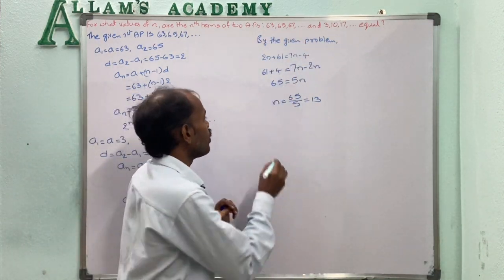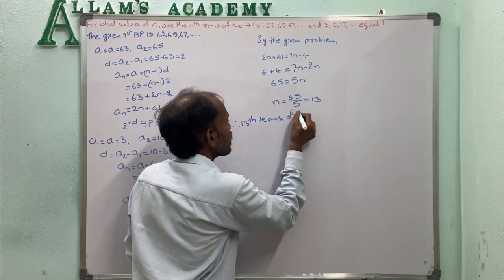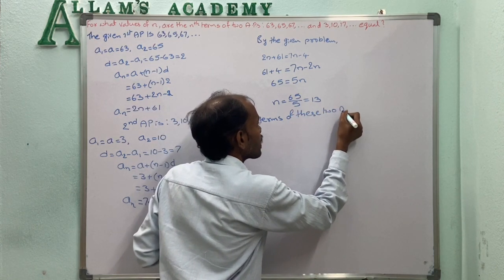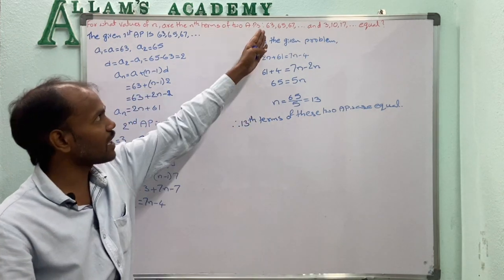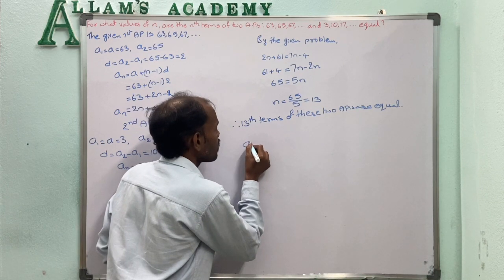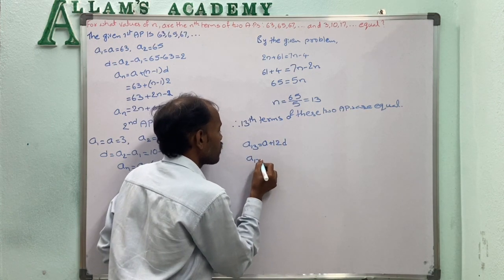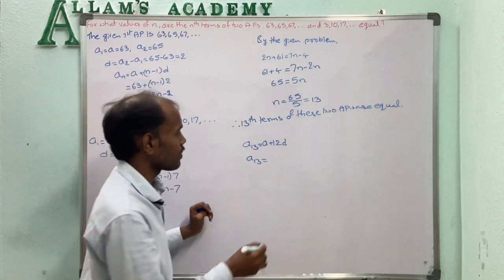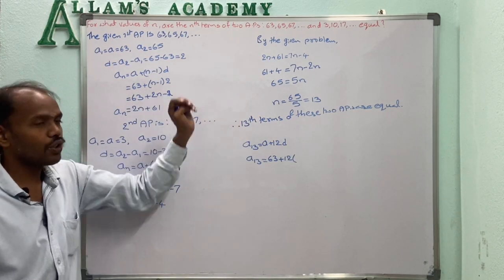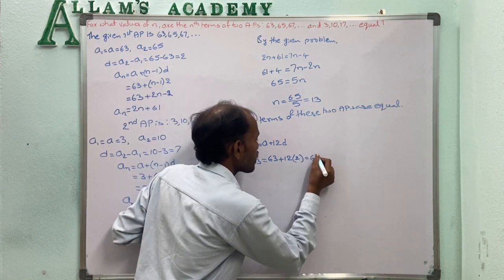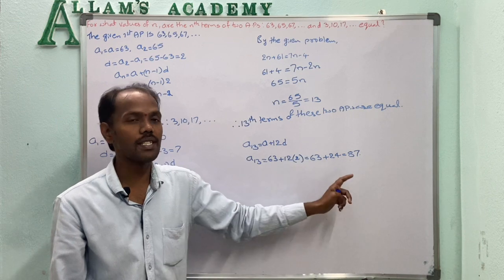The 13th terms of these two APs are equal. To verify, the 13th term of the first series: A13 = A + 12D = 63 + 12 × 2 = 63 + 24 = 87.